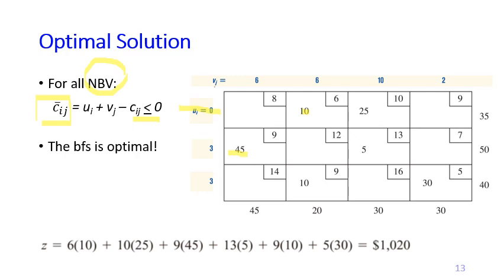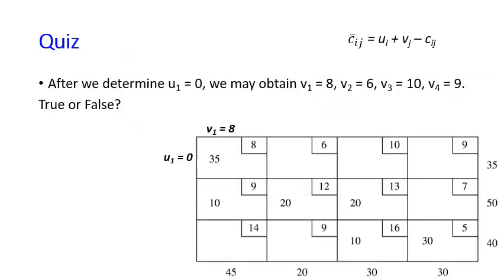Then the total cost is, you can calculate, 10 items times 6, 25 items times the cost is 10, 45 items times the cost is 9, 5 times 13, 10 times 9, and 30 times 5. So the total cost of this solution, and it is the optimal solution, is $1,020. So here are some questions to check your understanding.